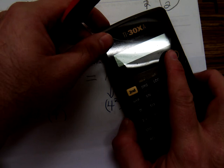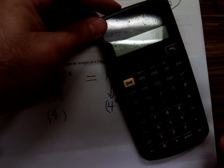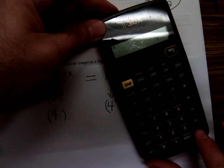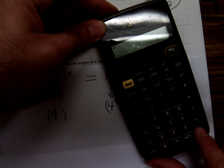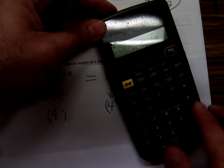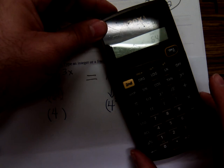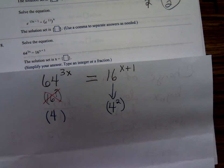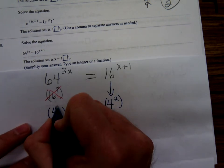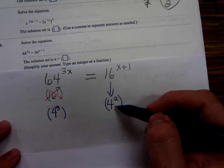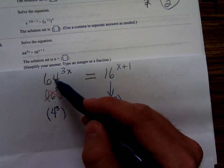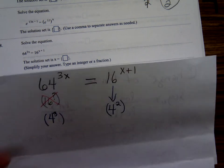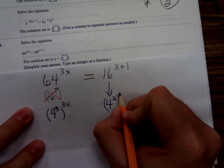Here's my calculator. 4 times 4, that's 16, times one more 4 is 64. So 4 to the third is 64. I'm rewriting 16 as 4 squared. I'm rewriting 64 as 4 cubed raised to the 3x power, and the x plus 1 power.